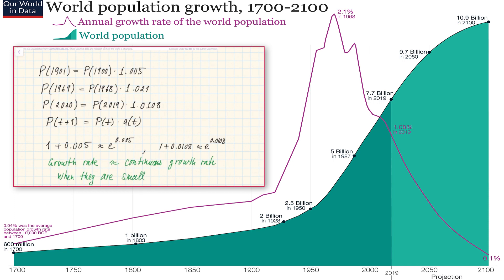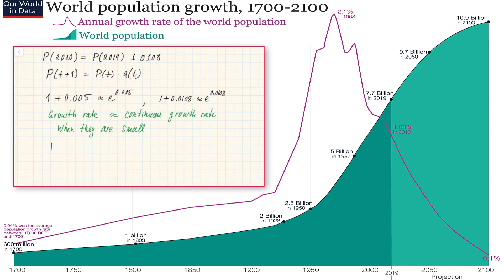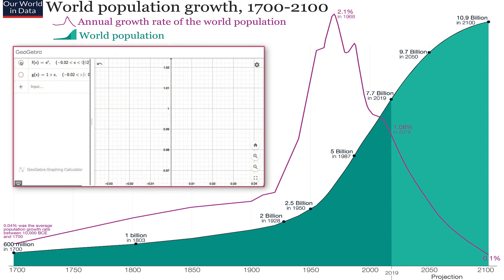To put it more mathematically, we can say that 1 plus x is approximately equal to e to the x when x is small. You might know this already, and we will discuss it when we talk about derivatives. But if you simply look at the graph of these functions on GeoGebra — graphing the exponential between minus 2% and 2% alongside 1 plus x — you can see they are very, very close. We often say that if you look at a smooth function and zoom in, it looks like a linear function. Zooming in on the exponential near zero, it looks like this linear function 1 plus x.